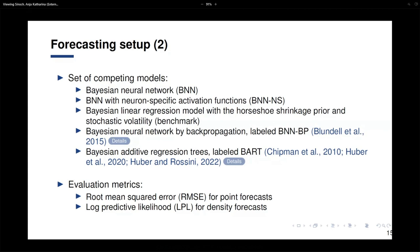We use two versions of our Bayesian neural networks: one with a common activation function for all neurons, and one with a neuron-specific activation function. Our benchmark is always the Bayesian linear regression with a horseshoe shrinkage prior and stochastic volatility. We also estimate a Bayesian neural network by backpropagation — a popular approach in the deep learning literature — and Bayesian additive regression trees (BART), to check whether controlling for nonlinearities in a different way might help. Evaluation is based on root mean squared error for point forecasting and log predictive likelihoods for density forecasts.